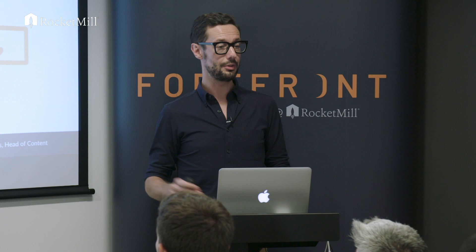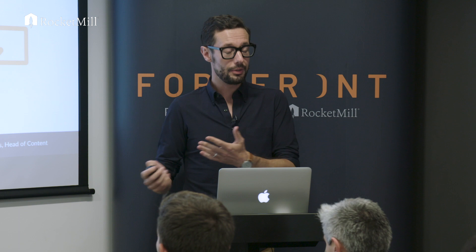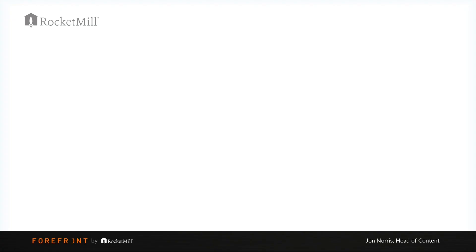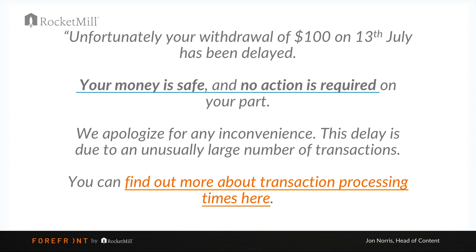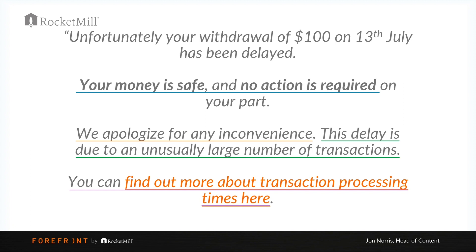The frustratingly bad error message then became something like this — exactly this. You can see all four elements within it. We're reassuring right up front: your money is safe, you don't need to do anything. We're empathising and apologising. We're explaining why the error happened. And we're providing a clear next step at the bottom. It's also little subtle things like moving to talking about the company in the first person — saying 'we' rather than the company name — to humanise the brand and give people a little more empathy towards them.